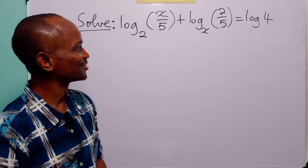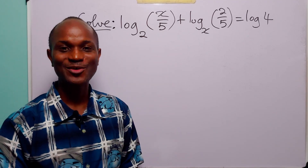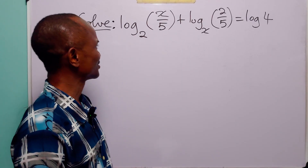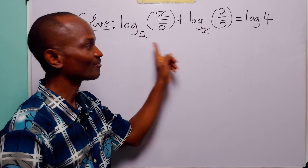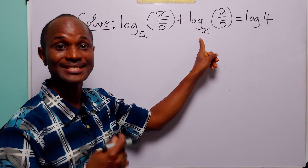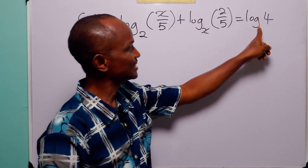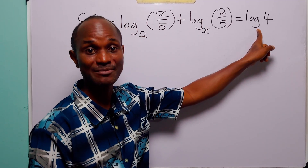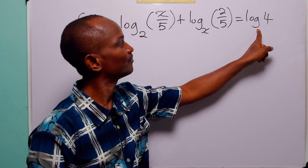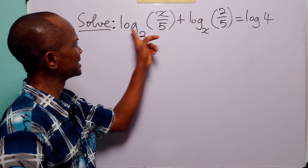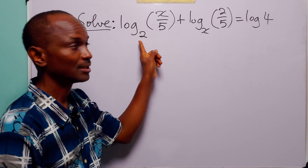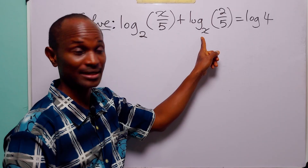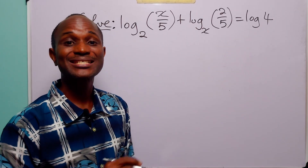Hello and welcome. In this tutorial our task is to find the values of x that satisfy the given logarithmic equation. When you look at this equation you'll see that this log term is in base 2, while this log term is in base x — the unknown — and this is in base 10. When the base of the logarithm is not specified it means we are working in base 10, the common logarithm. To solve this problem we need to change the log term from base 2 to base 10 and the log term from base x to base 10.